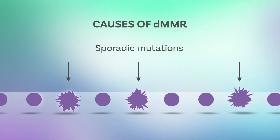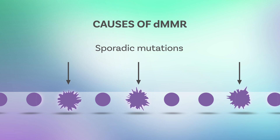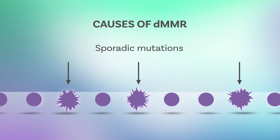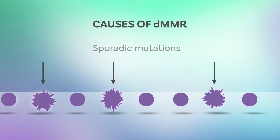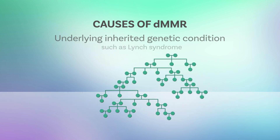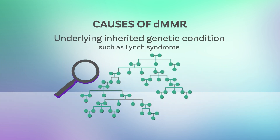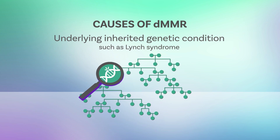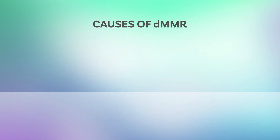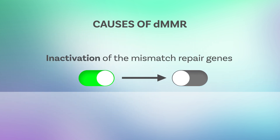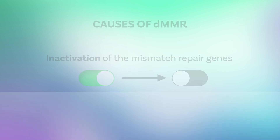So what causes dMMR? It can be due to sporadic mutations or an underlying inherited genetic condition such as Lynch syndrome. It can also be due to inactivation of the mismatch repair genes, not unlike your spell check on your computer being inactivated.